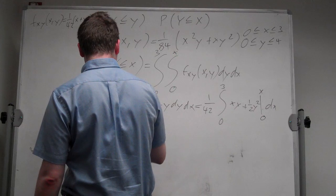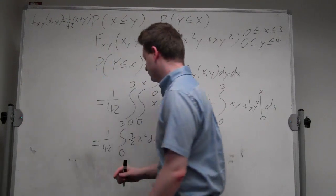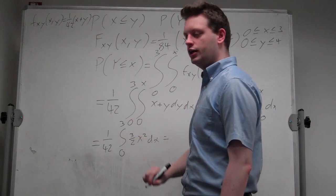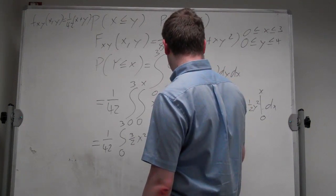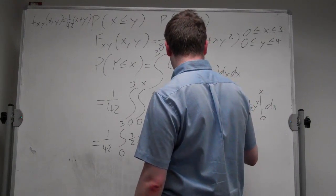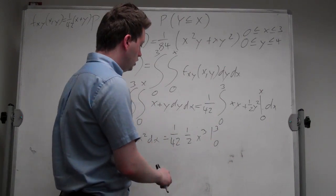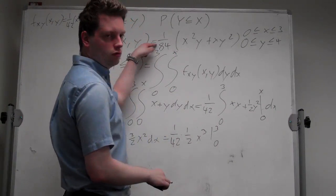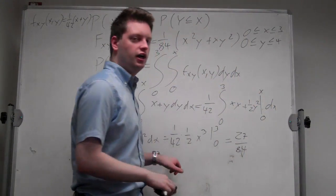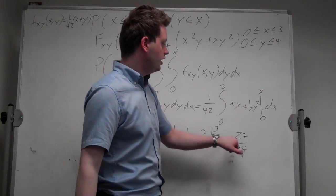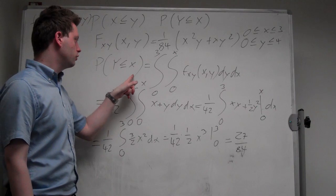And I get 1 over 42 integral from 0 to 3 times 3 over 2 x squared dx. Well, nothing is easier than calculating that: 1 over 42 times 1 over 2 x to the power of 3 from 0 to 3. Integrating this with 0 will be 0, so we just have to plug in 3. So note that this expression is just 1 over 84, and we're left with 27 over 84, which is our probability of y being less than or equal to x.